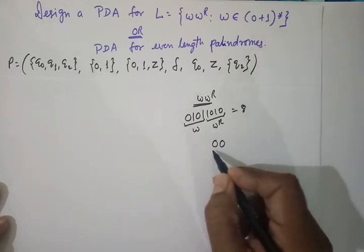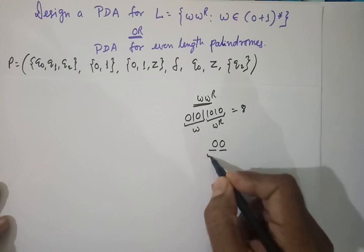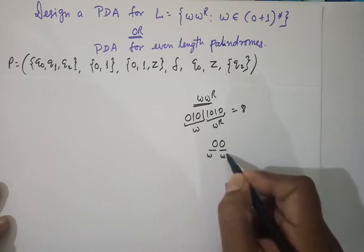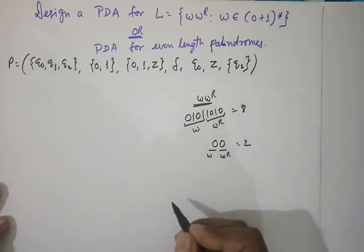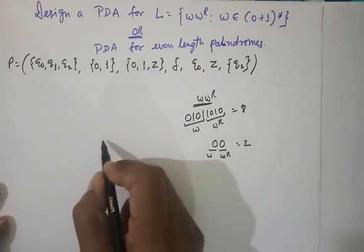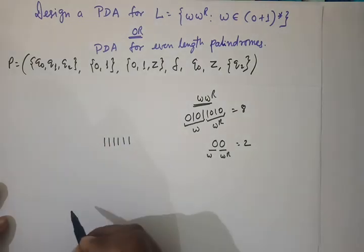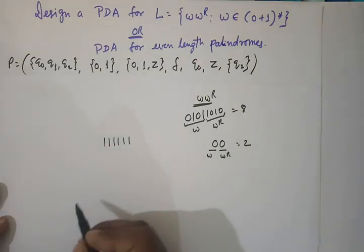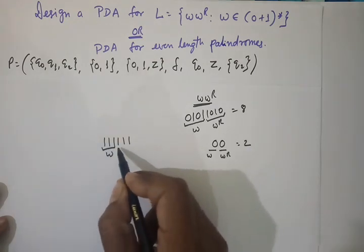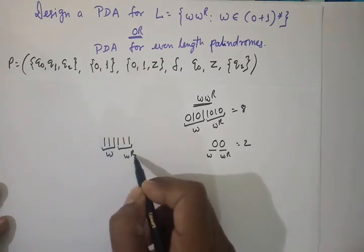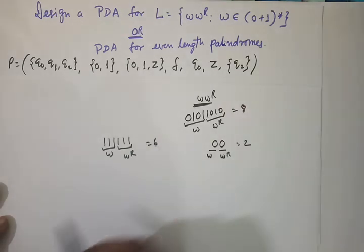Similarly, '00' should be accepted. This is W and this is WR; the length is 2, which is again even. For '111111': this is our W part and this is our WR part — it should be accepted. The length here is 6.